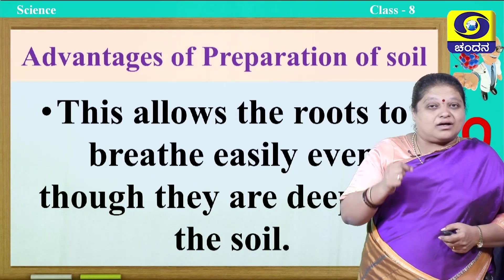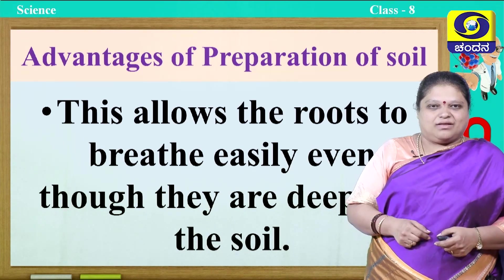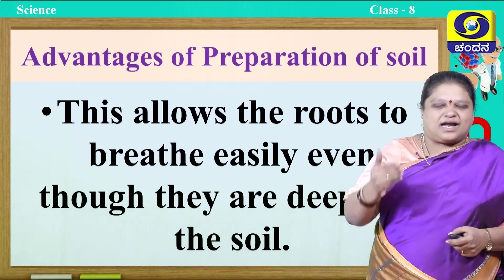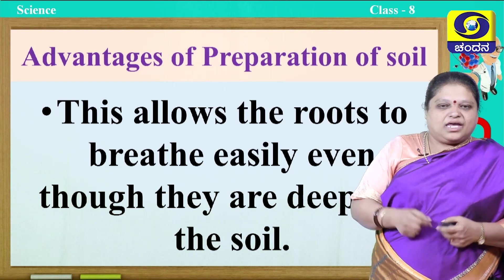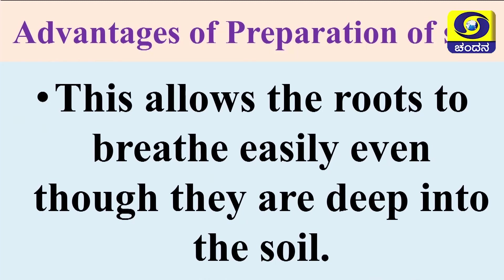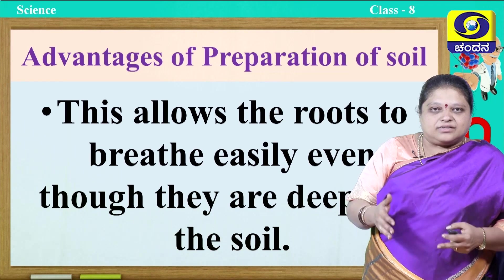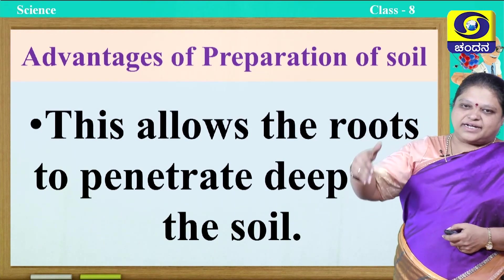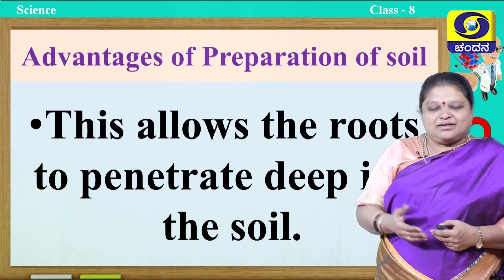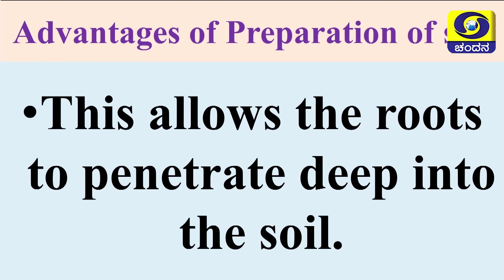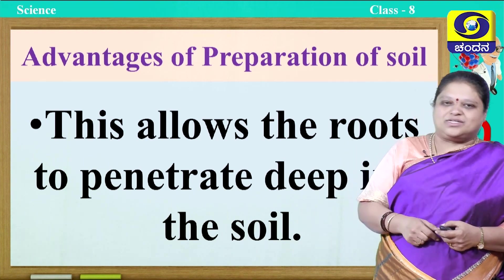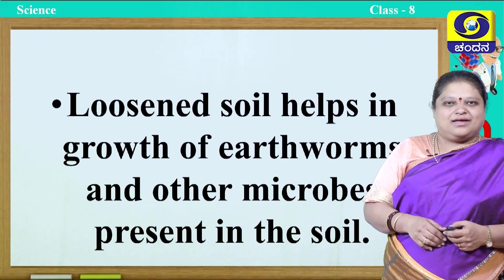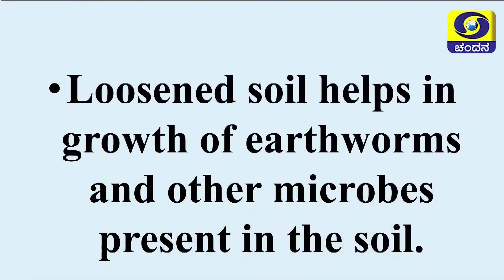Now let us see what are the advantages of preparation of the soil. Write down. If you till the land and prepare it, it allows the roots to breathe easily even though they are deep in the soil — because you have tilled the land so air will easily pass and the roots can breathe nicely. Next, it allows the roots to penetrate deep in the soil. As the plant grows into a tree, the more the height, the deeper it should be. This tilling will help roots penetrate deep. Next, loosened soil helps in the growth of earthworms and other microbes present in the soil. Earthworms and microbes necessary for fertility of the soil will come up and help.